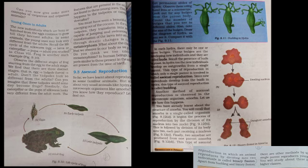So far, we have learned about reproduction in some familiar animals. But what about very small animals like hydra and microscopic organisms like amoeba? Do you know how they reproduce?